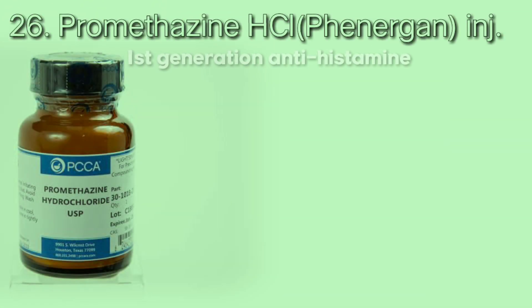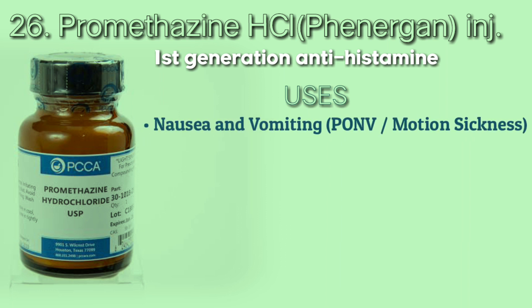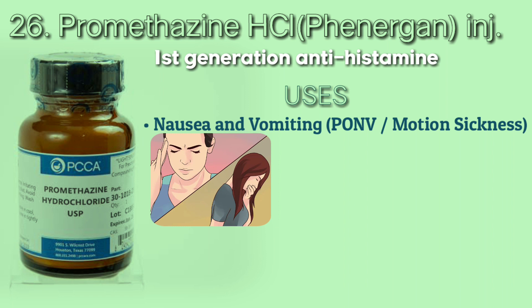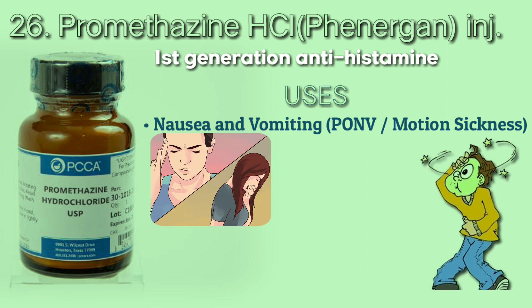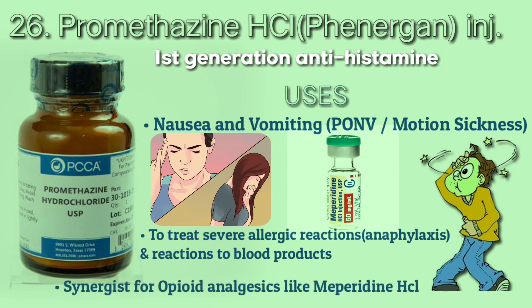Promethazine is a first-generation antihistamine used to prevent and treat nausea and vomiting related to certain conditions such as before or after surgery and motion sickness. It is used with other medications to treat severe allergies and reactions to blood products. It also helps opioid analgesics like meperidine to work better.